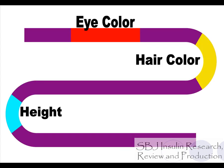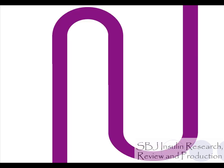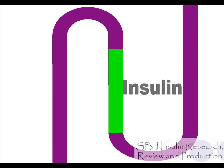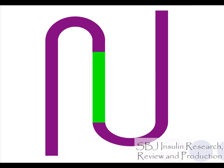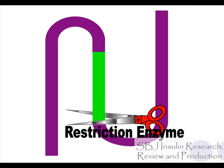An organism is genetically modified when its genes have been changed. There is also a gene in your DNA that makes insulin — insulin is what Prem needs. So, to get this gene, we use restriction enzymes to cut it out.